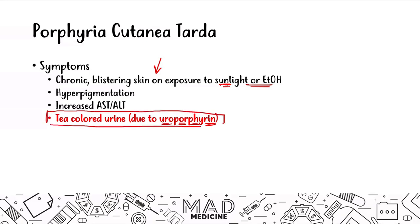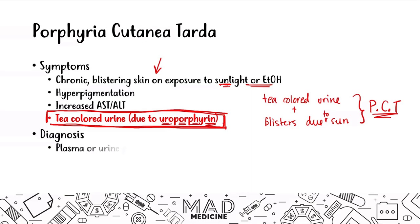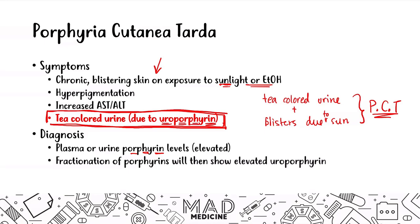If you see a patient presenting with tea-colored urine and blisters due to sun exposure, you should be thinking about porphyria cutanea tarda, as these two features are very specific to PCT. To diagnose, you look at plasma or urine porphyrin levels, which will be elevated. A fractionation of the porphyrin will show elevated uroporphyrin, which is the confirmatory finding for porphyria cutanea tarda.